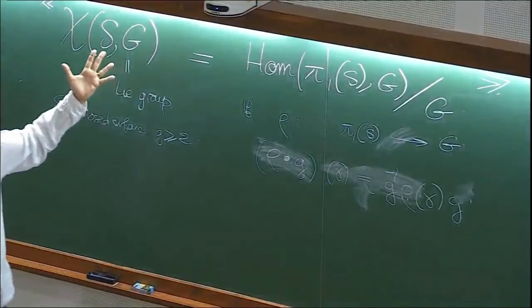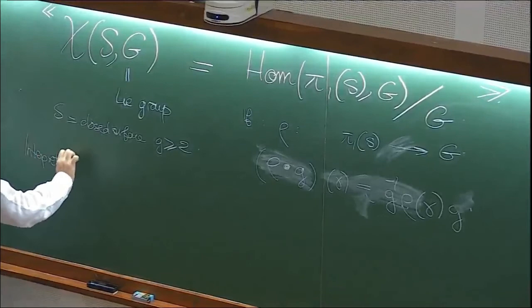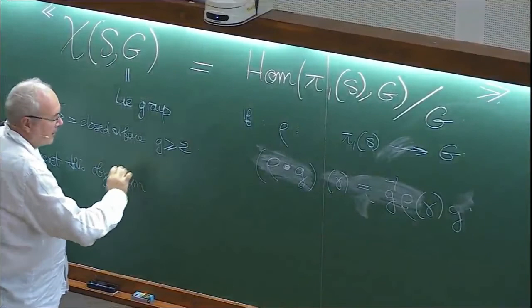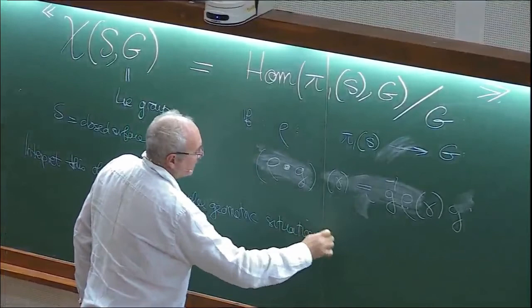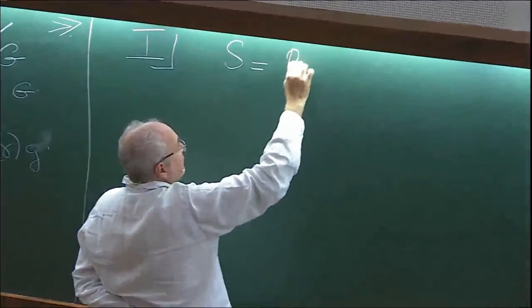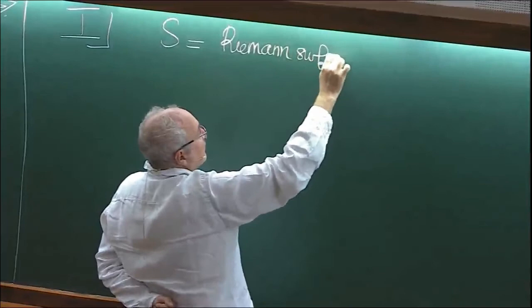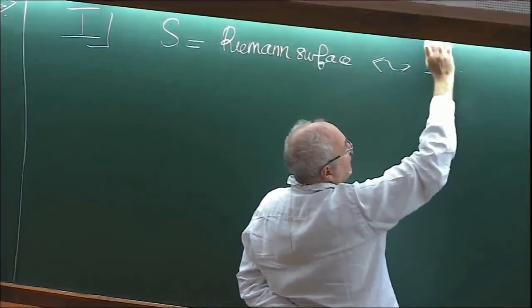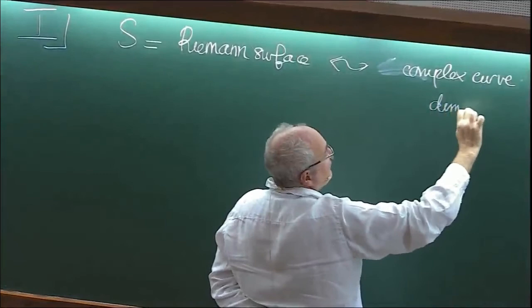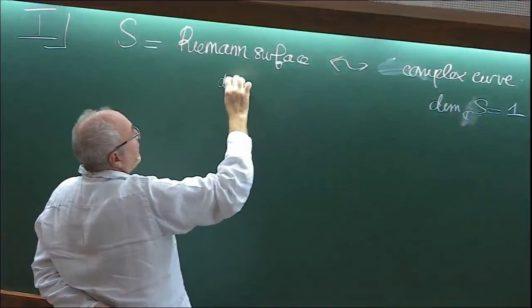The goal is to interpret this object — the representation variety — in complex geometric data. In my talk, S will be a Riemann surface, which you can think of as a complex curve: its complex dimension is one, while its real dimension is two.